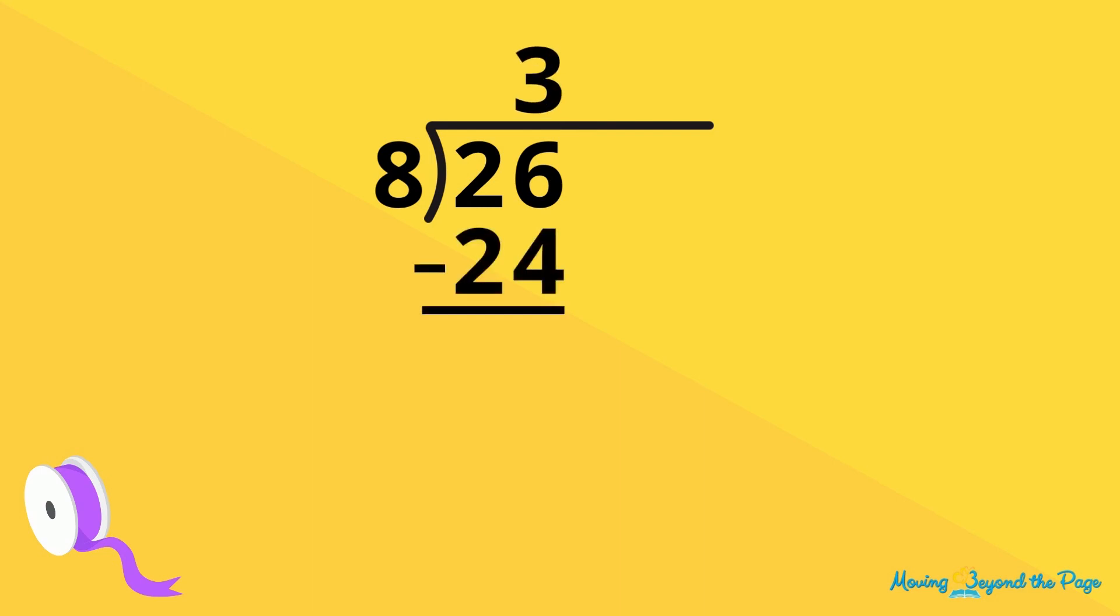You need to divide 26 inches into 8 equal pieces. 8 goes into 26 three times. Since there's a remainder, add a decimal point and a 0, and then bring down the 0. 8 goes into 20 two times.